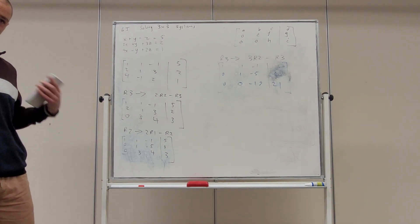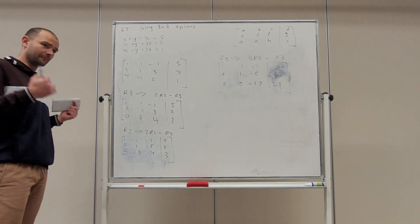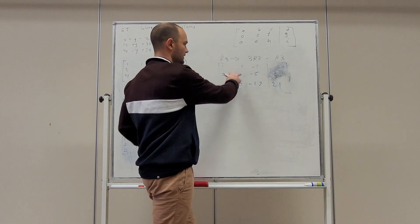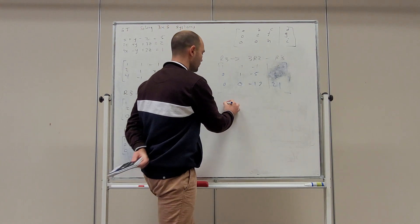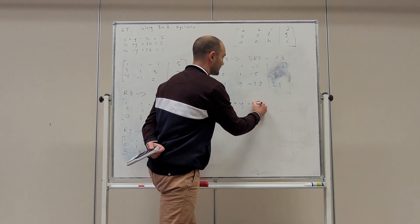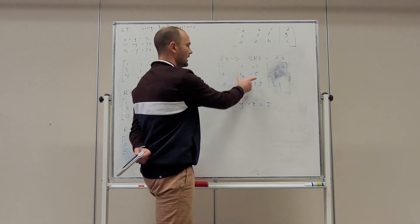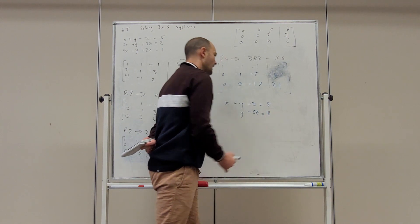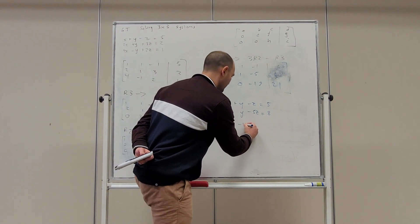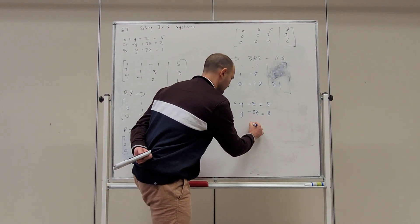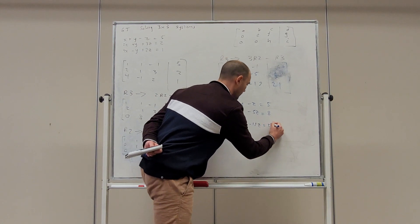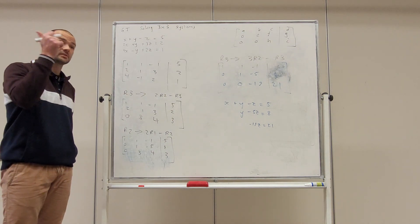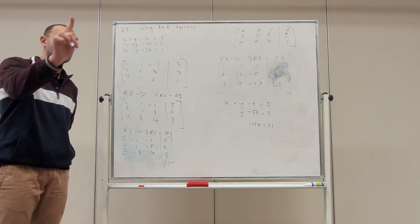So now, if we're solving this system of equations, we want to know the values of x, y, and z. Restating it in terms of variables: in our first row we have x plus y take z equals five. In our second row we have y take five z equals eight. And in our last row we have minus nineteen z equals twenty-one. We can now solve this system of equations for x, y, and z exactly.